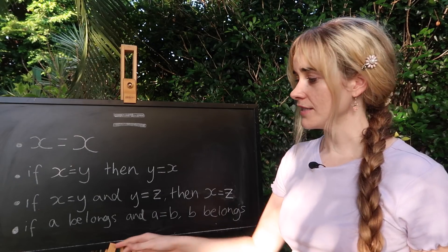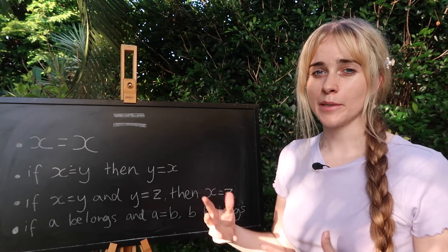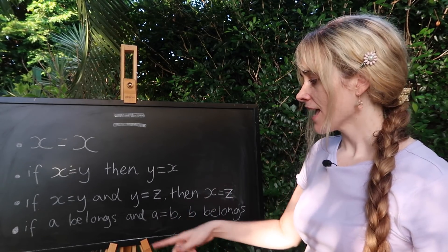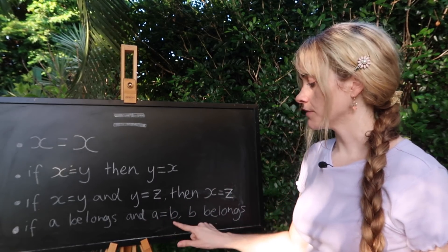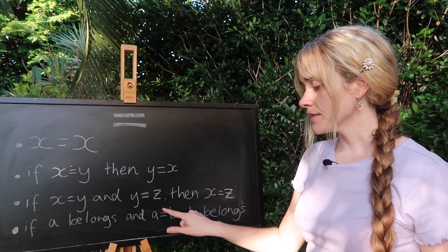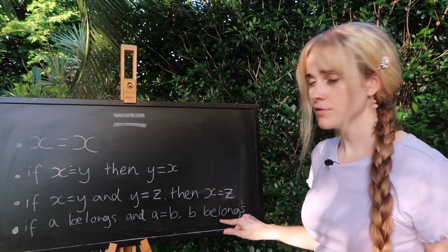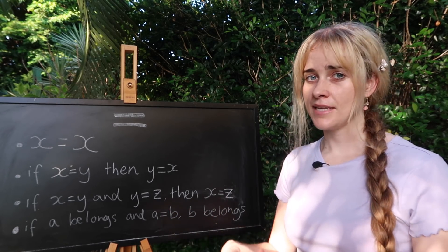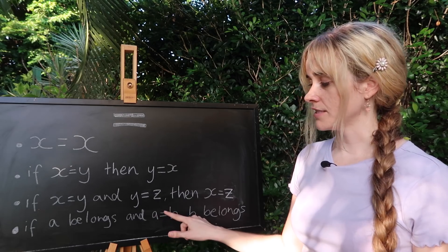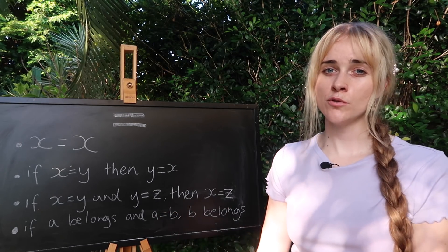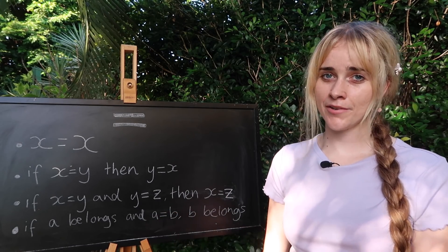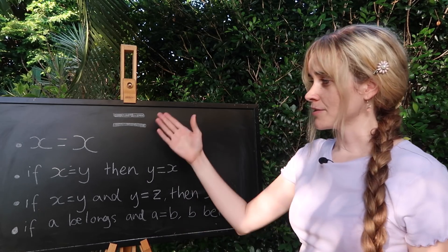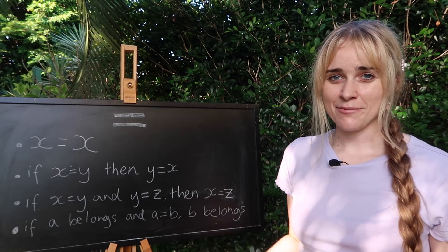Our fourth rule is that if a belongs to some group, some collection, and a is equal to b then this equality means that b also belongs to that same group. a and b are said to be closed under equality and anything they are equal to will also be part of the same group.